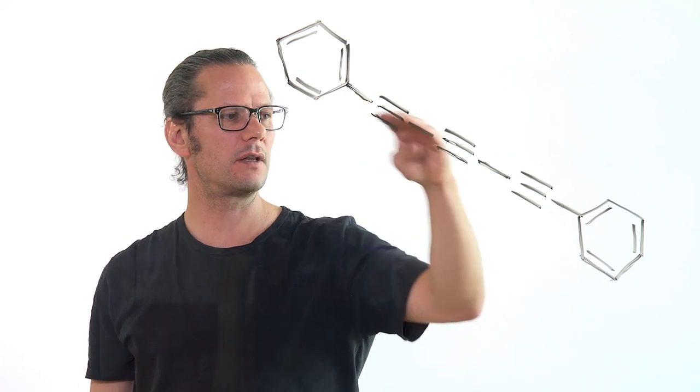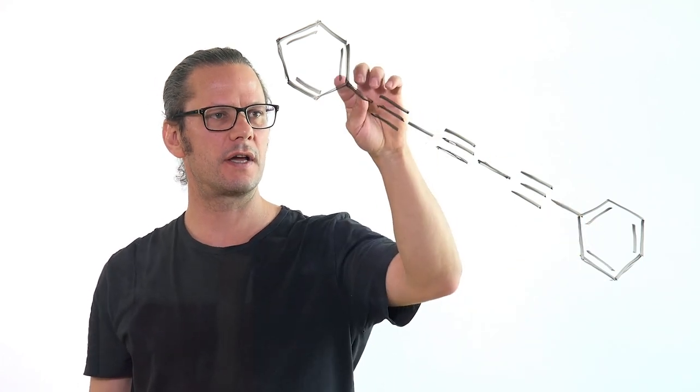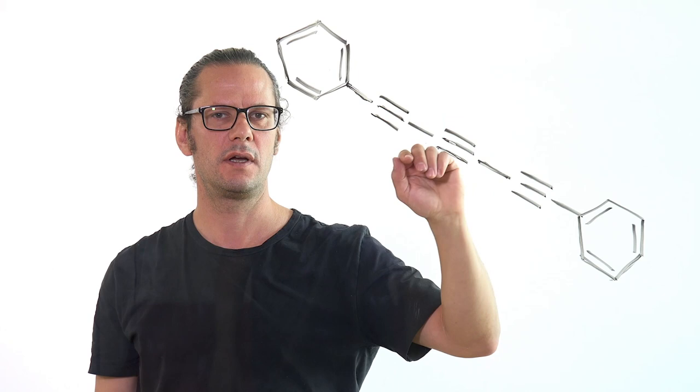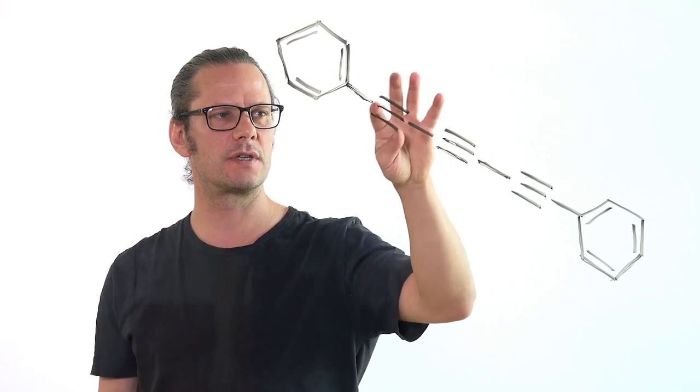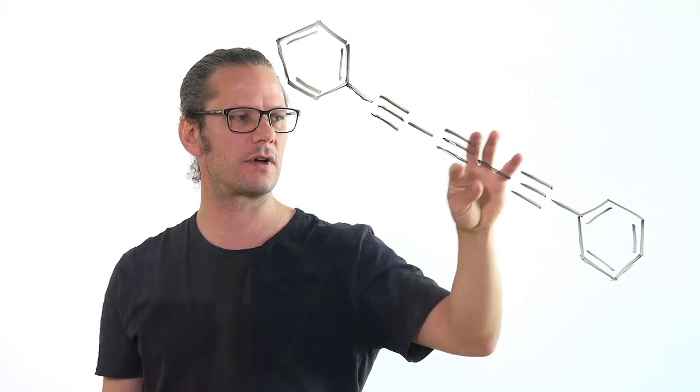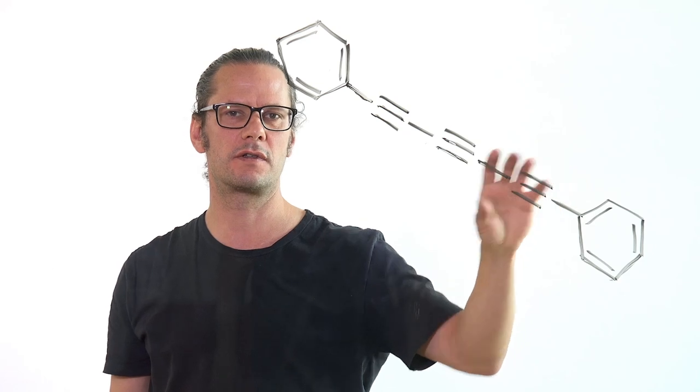We have now this linear carbon chain which consists of alternating single and triple bonds. And in the AFM image you could see the characteristic bright contrast due to these triple bonds.